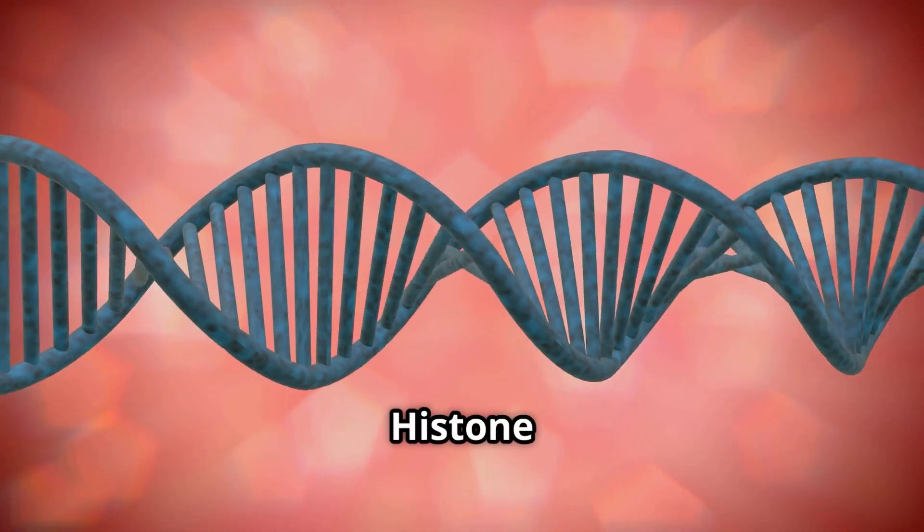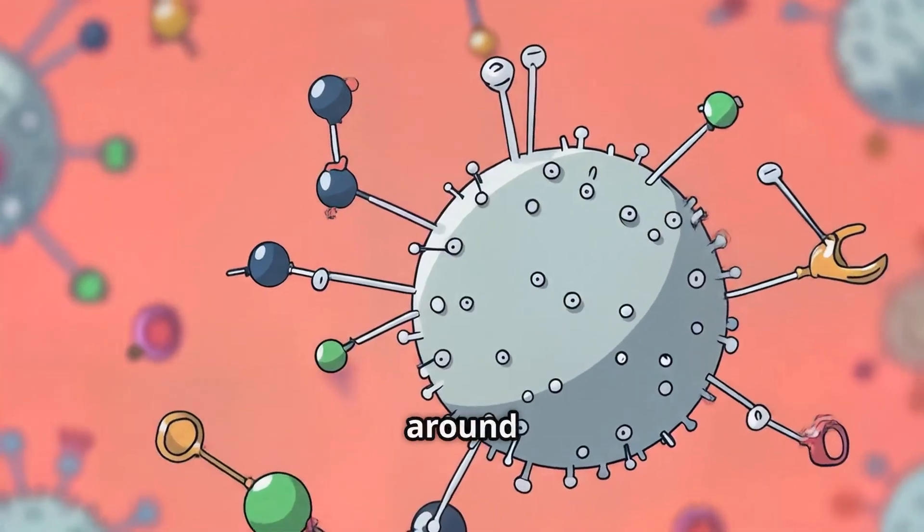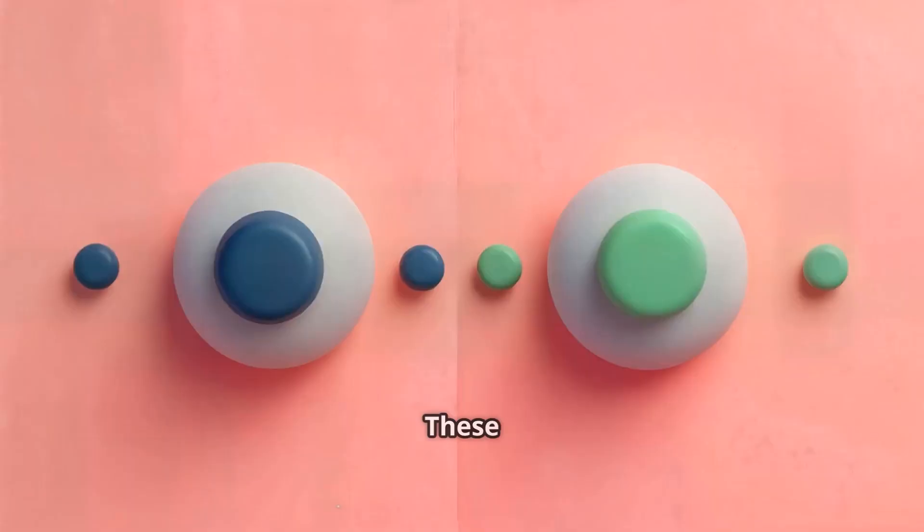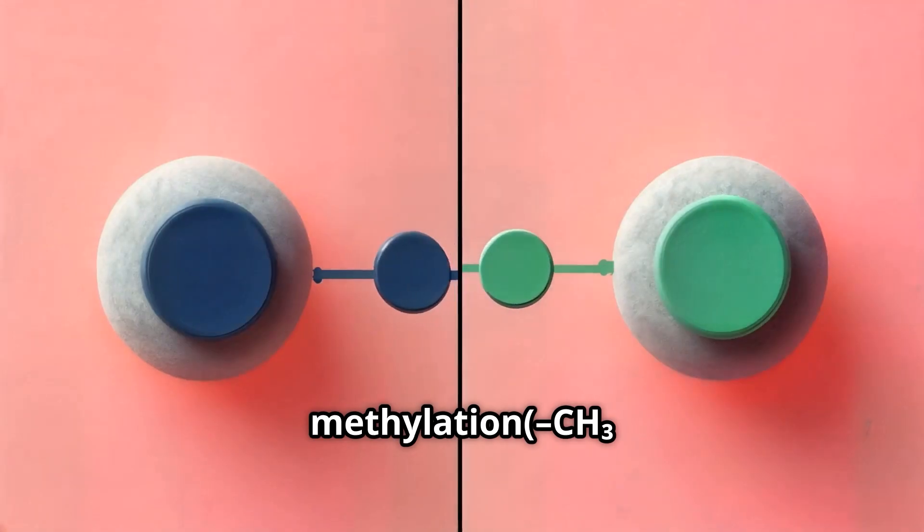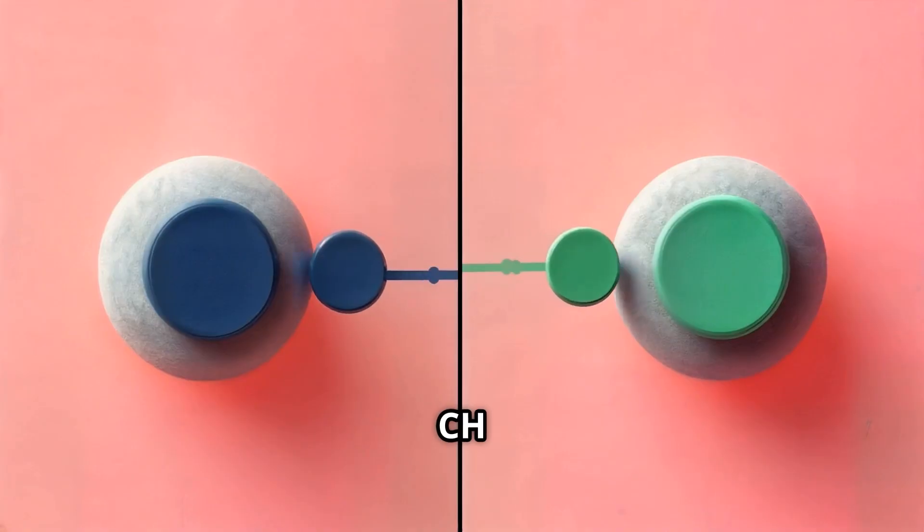Second, histone modification: DNA wraps around proteins called histones. These histones can be chemically modified, for example, methylation (CH3) and acetylation (COCH3).